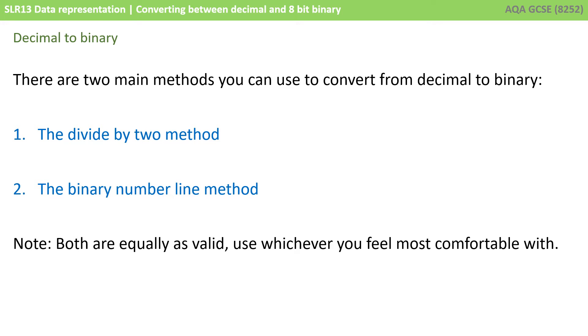Let's start with turning decimal into binary numbers. There are two main methods you can use to do this. The first is known as the divide by 2 method and the second the binary number line method. Both are equally as valid. Use whichever one you feel most comfortable with.